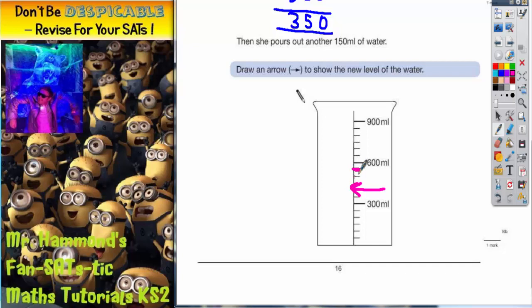And that would be down another 150. Another way of doing it would be to say well if she's starting with 550 and she takes away another 150, how much has she got left? 0 take 0 is 0. 5 take 5 is 0. 5 take 1 is 4. So she's going to be left with 400 milliliters. And 400 milliliters, remember if every mini gap is worth 50 it would go 300, 350, 400. So either way the arrow needs to go where we've drawn it there.